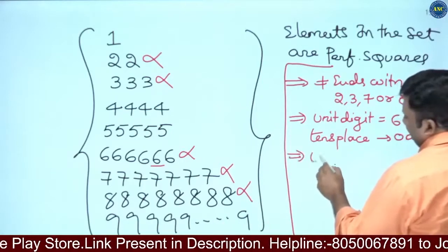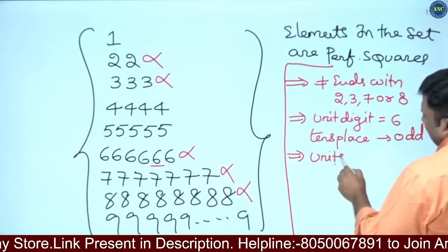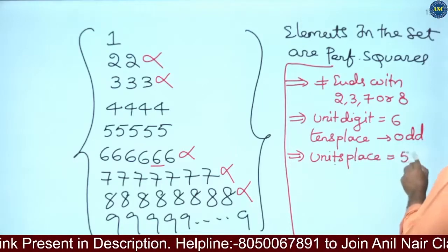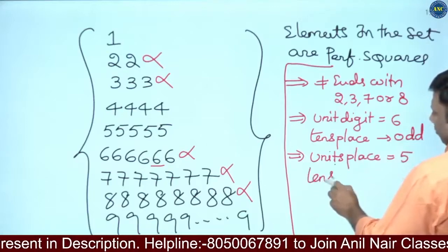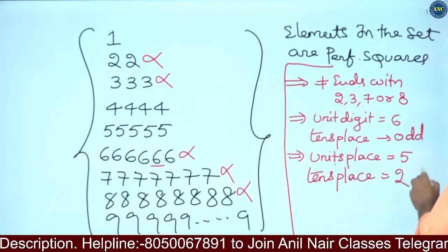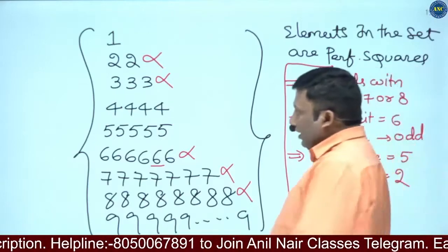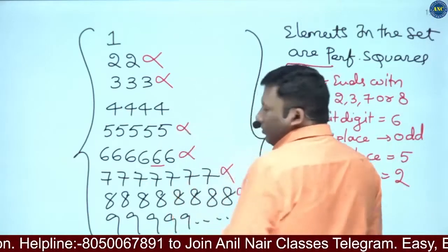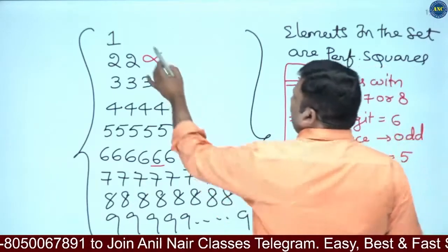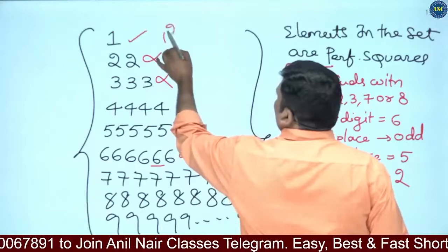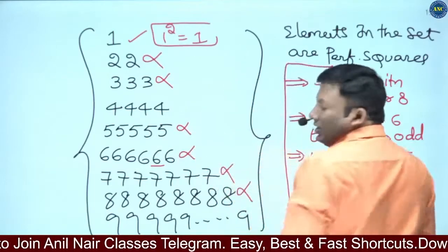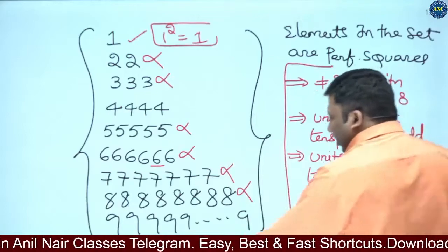Any perfect square with units digit 5 must have tens digit 2. For example: 5² = 25, 15² = 225, 25² = 625. For 55555, the tens digit is 5, not 2 — so this is not possible. Now checking element 1: 1² = 1, so the first element is a perfect square.